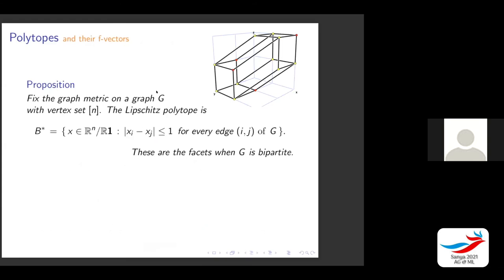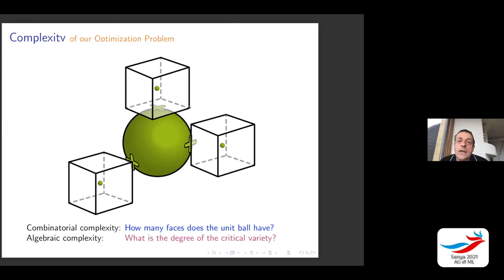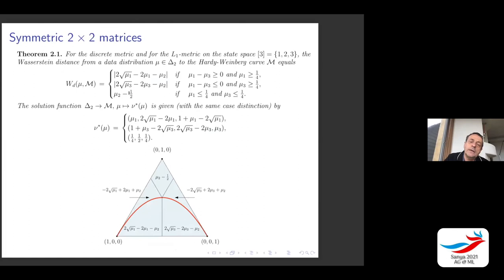I have a question: in this case, what is the degree of the critical variety? The degree is either one or two. You need to solve a system of equations. In this scenario it's either degree one — a rational Wasserstein MLE — or a quadratic extension for the MLE. I'll give a general formula in a moment.